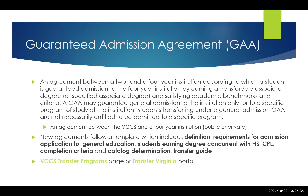This may guarantee general admission to the institution or, in some cases, to a specific program of study, but it doesn't necessarily entitle the student to be admitted to a specific program otherwise. These are between the Virginia Community College System and the four-year institution, both public and private. The new agreements follow a template that includes definitions, requirements for admission, how general education applies, students earning degrees concurrent with high school, and credit for prior learning. It also covers catalog determination — whether the student is under the catalog from their first semester after high school or when they arrive at the four-year institution. These can be found on the VCCS transfer programs page or on the Transfer Virginia portal.